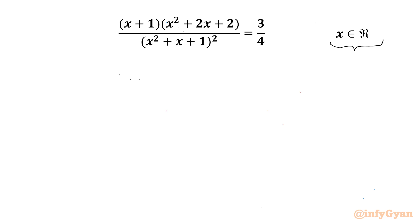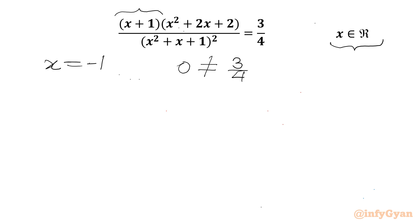Let's get started by checking our equation at x equal to negative 1. Due to this bracket we will get 0 as our LHS and RHS is 3 over 4, which are not equal to each other. So I can conclude x cannot be equal to minus 1 for our equation.